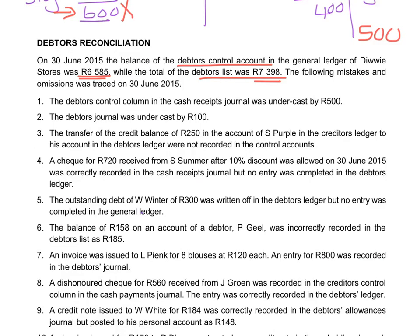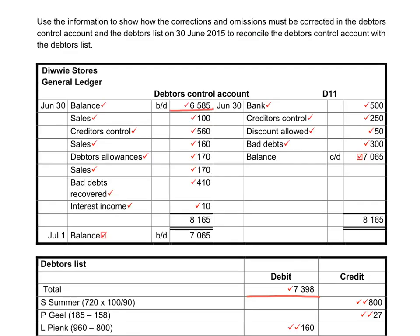The debtors control account in the cash receipts journal was undercast by 500. Undercast means it was added up by too little. If the debtors control total is incorrect, we made a mistake in the debtors control account because we posted that incorrect amount to it. When we record something in the cash receipts journal, bank is debited and debtors control is credited. Therefore, if we put 500 too little on the credit side, we correct it by entering 500 on the credit side. The debtors control account will be credited with 500 and bank debited. There is no individual entry mistake, so there is no mistake in the debtors ledger.